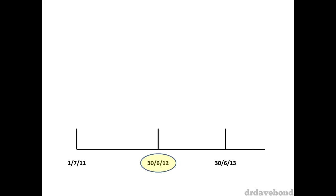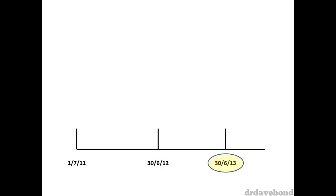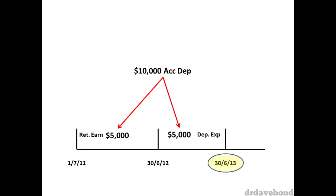On the 30th of June 2012, one year has passed, so there is $5,000 of additional depreciation, which means there is a current expense of $5,000, and the extra balance in accumulated depreciation should be $5,000. On the 30th of June 2013, two years have passed, so there is an additional $5,000 expense from last year shown up in retained earnings, due to the fact that the consolidation worksheets start from scratch, a $5,000 additional expense this year, and the extra $10,000 balance in accumulated depreciation.